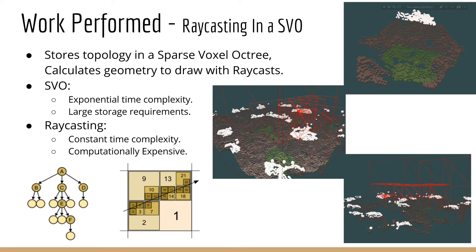Compared to the marching cubes algorithm, raycasting into a sparse voxel octree is much more complicated, but thrives in scenarios where marching cubes would struggle. In my implementation, based on the 2010 NVIDIA technical report, only the topology of the terrain is stored in the octree, and the root of the octree encompasses the entire terrain. Each child node then represents a subsection of the parent voxel. A simplified tree structure and a quad tree can be seen in the bottom left to help visualize the octree structure.